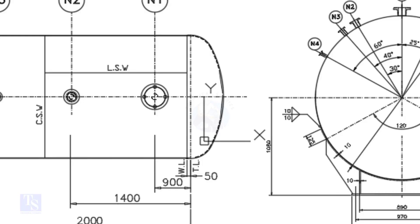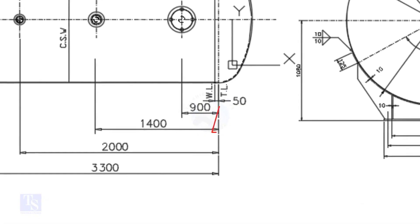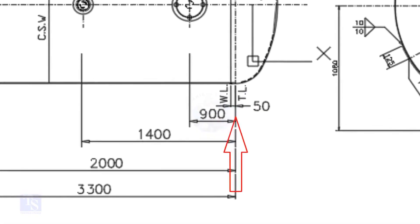In this drawing, the nozzle center distance starts from the TL. In some drawings, you may see the nozzle center is given from the WL, so before starting the marking, carefully check these things.